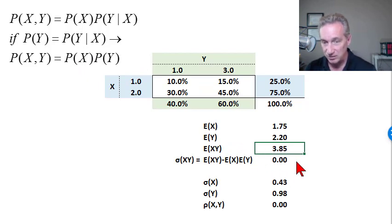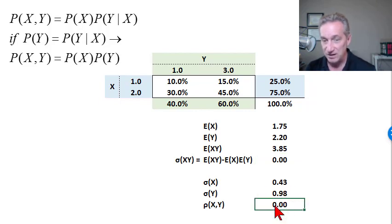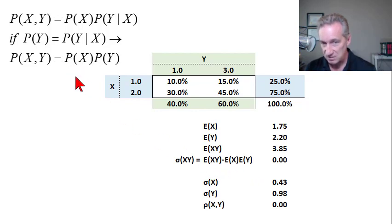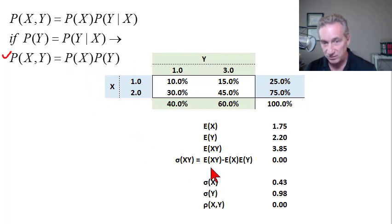Independent implies zero covariance. We can also standardize the covariance into a correlation by dividing by the product of standard deviations, and we get a correlation of 0. Notice the pattern relationship: we have probabilities in the independence test, and expectations in the covariance formula — not exactly the same, but notice the pattern. Our statistical test of independence says the joint probability minus the product of marginals must equal zero. Notice how that relates to the covariance: the expected cross product minus the product of expectations.